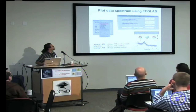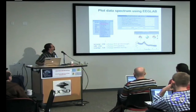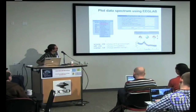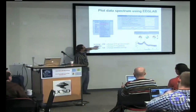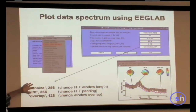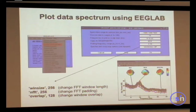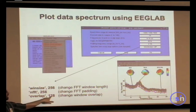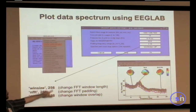Load the dataset into EEGLab using File > Load Dataset, then use the menu called 'Channel Spectra and Maps.' You are going to change three parameters in the last edit box: the window size, the padding (the FFT length), and the overlap. For example, if you have a window size of 256 and set NFFT to 512, you are using padding with a window twice as big. All values are in data points.